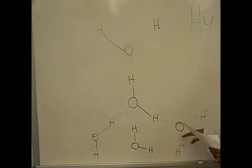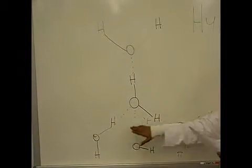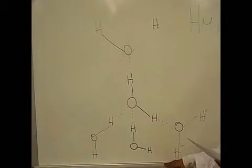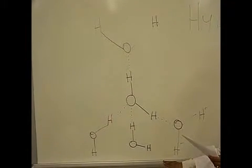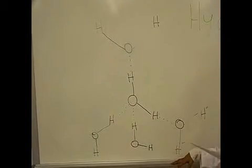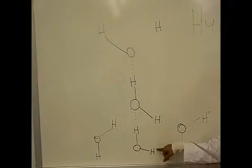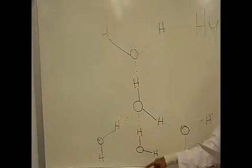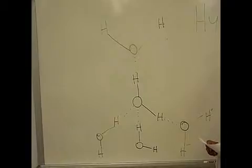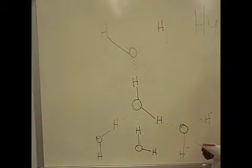When water molecules are close together, their positive and negative regions are attracted to the oppositely charged regions of nearby molecules. The force of attraction shown here as dotted lines is called a hydrogen bond. Each water molecule is hydrogen bonded to 4 others. The hydrogen bonds that form between water molecules account for some of the essential and unique properties of water.